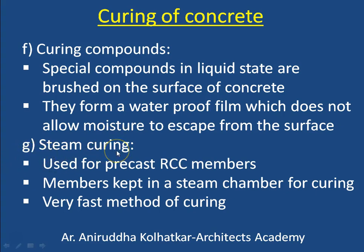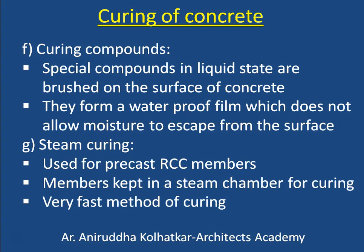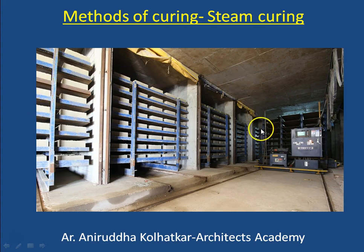The next method is called steam curing. Steam curing is a process normally used for precast RCC members — when concrete is to be manufactured in a factory on a very large scale. The precast members are kept inside a steam chamber where steam is created, and because of the presence of moisture within the chamber, the moisture from the elements does not escape out easily, and therefore curing occurs. This method is very fast and therefore it is used for mass production of concrete members. The photograph shows a chamber in which these members are kept, and then steam is put inside this chamber and the members get cured as a result.